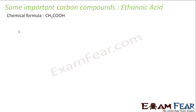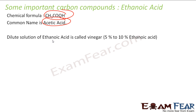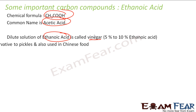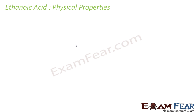The compound which we discussed is ethanoic acid. The chemical formula is CH3COOH. The common name is acetic acid. The dilute solution of ethanoic acid is also called vinegar, which we must have seen at home. It is generally used to prepare Chinese food or also used to preserve pickles.